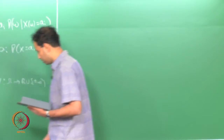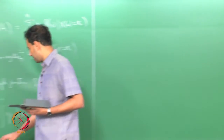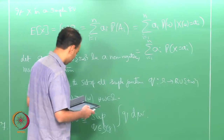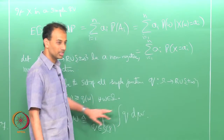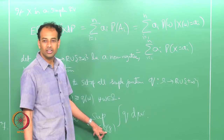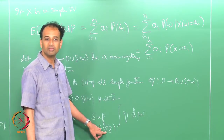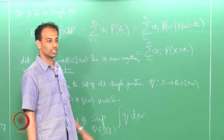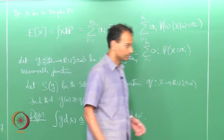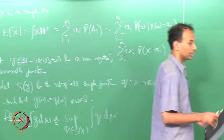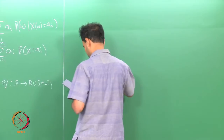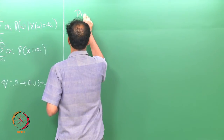One thing I want to point out is that this supremum may not be attained. The supremum exists, but the supremum may not be attained for any particular q in S of g — there may not be a particular simple function which attains this supremum — but it is well defined nevertheless.